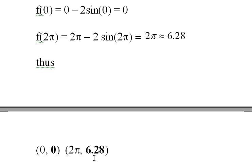0 and 0, and 2π and 6.28. This 0 is a possible absolute minimum, and this is a possible absolute maximum.